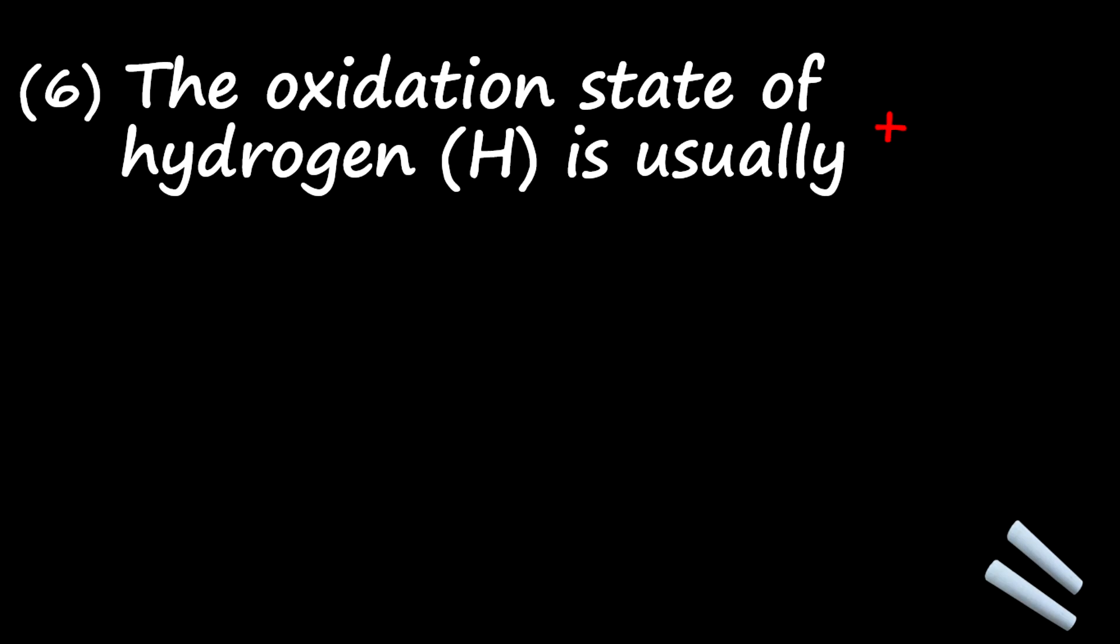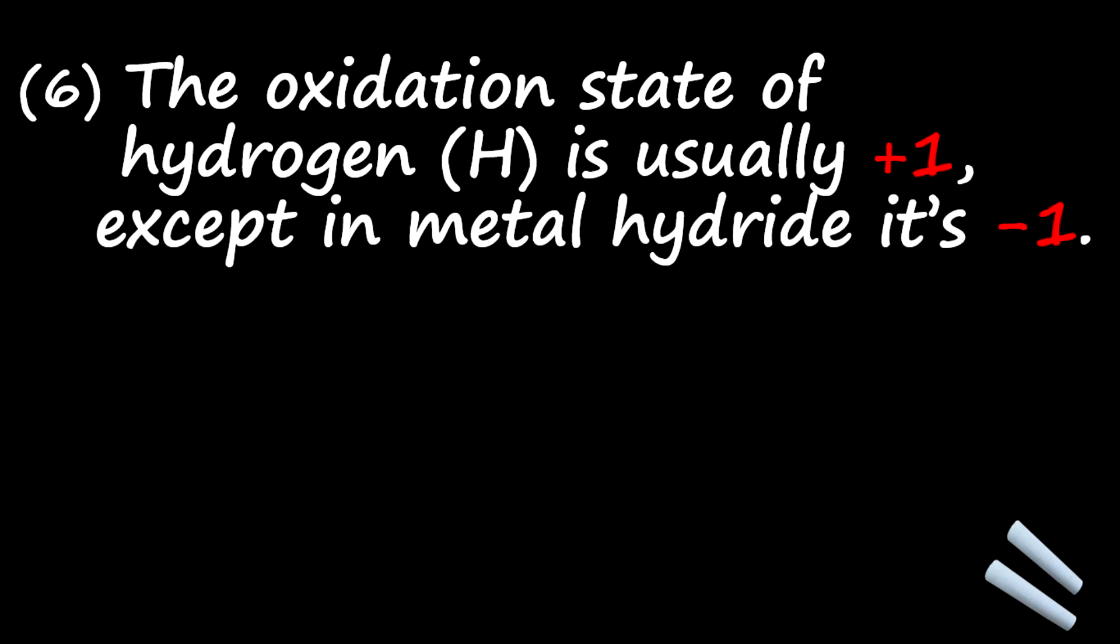Now let's look at another rule. The other rule here is that the oxidation state of hydrogen is usually positive one, except in metal hydrides, when it is negative one. So for some examples here, we have hydrogen fluoride or hydrofluoric acid, which is positive one. In this case, hydrogen is positive one. We also have lithium hydride, which is a hydride, in this case a metal hydride. It is negative one.